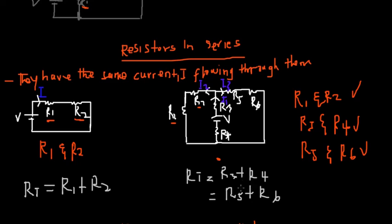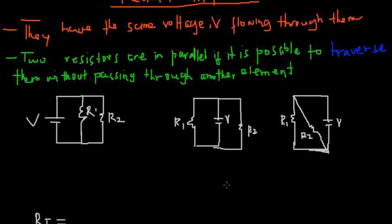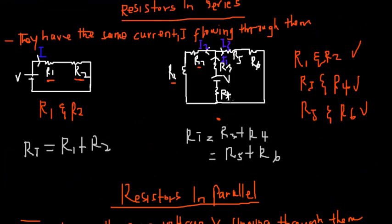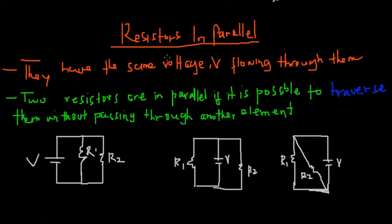Now let's look at resistance in parallel. Resistors in parallel have the same voltage across them. A helpful approach: since resistors in series have the same current, in contrast, resistors in parallel have different currents passing through them. A simpler method is the traversal approach — whenever you see two resistors and you can traverse between them without passing through another element, they are in parallel.